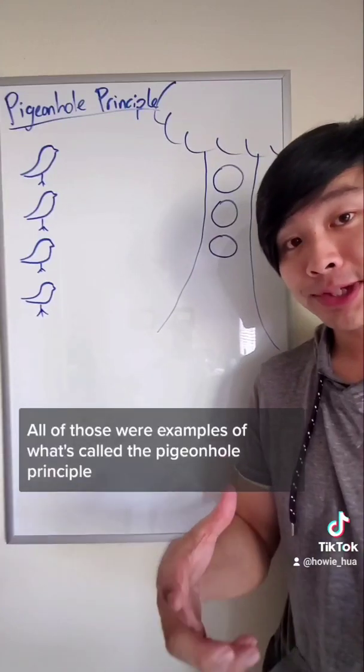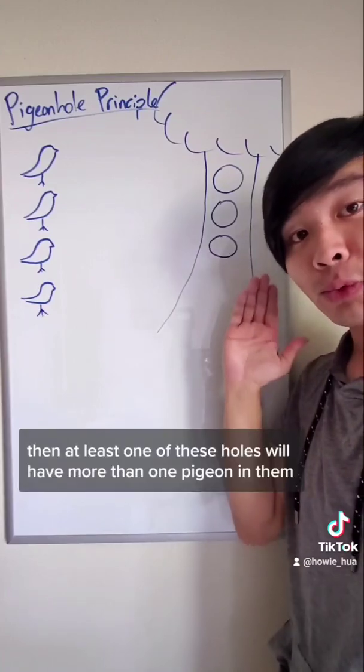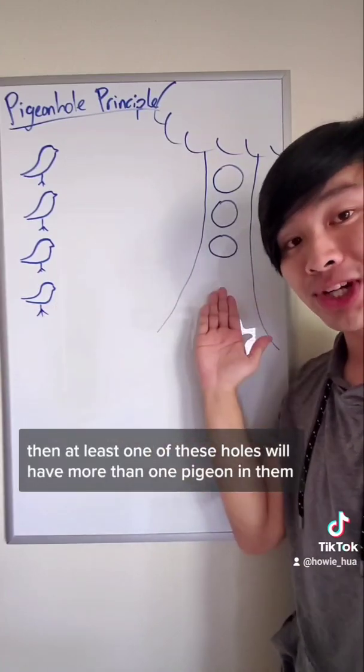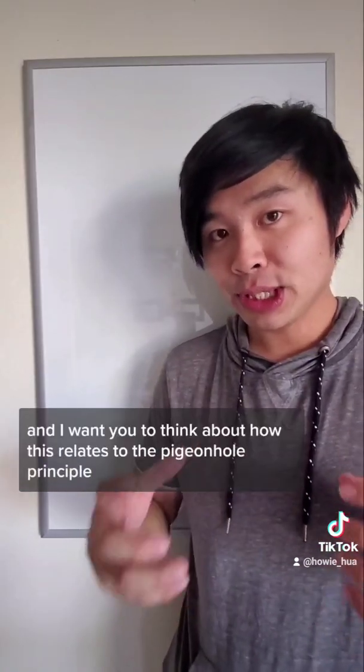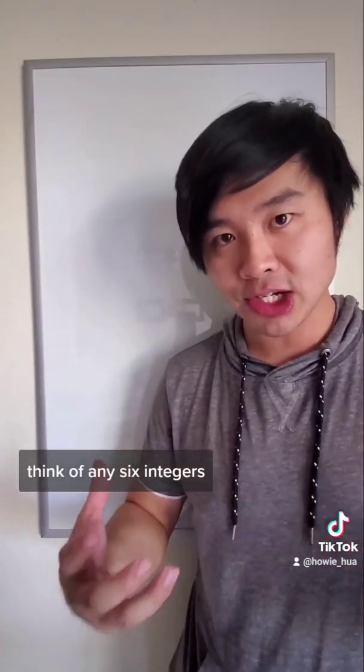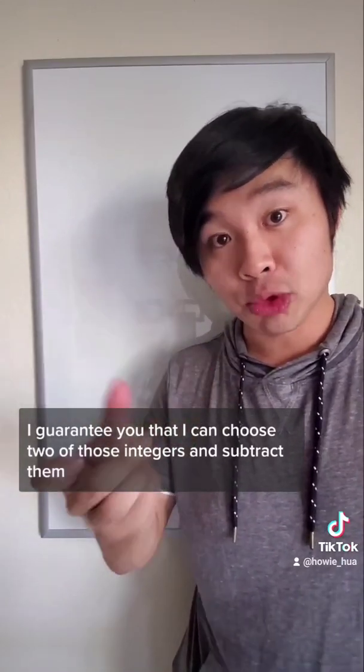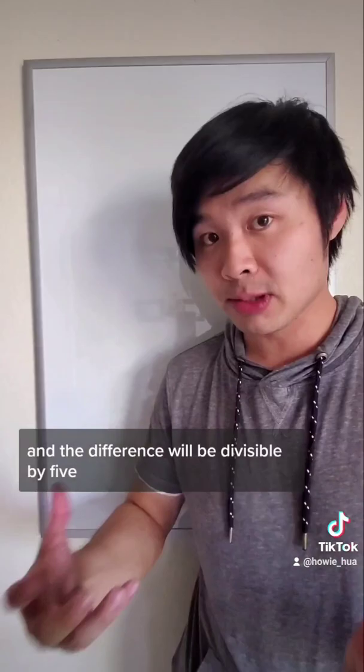All of those were examples of what's called the pigeonhole principle, which basically states that if there are more pigeons than holes, then at least one of these holes will have more than one pigeon in them. Now here's a math puzzle and I want you to think about how this relates to the pigeonhole principle. Think of any six integers. I guarantee you that I can choose two of those integers and subtract them and the difference will be divisible by five.